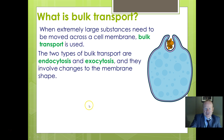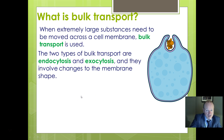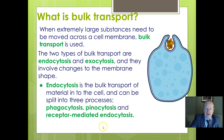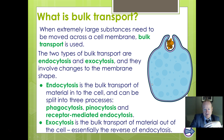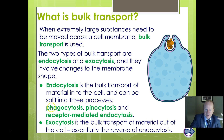Bulk transport — of which there are two key types, endocytosis and exocytosis — also requires energy. Both involve membrane shape changes. We've talked quite a bit about vesicles, which are just membrane-bound sacks made of plasma membrane. To be clear on the difference: 'exo' means exiting, so exocytosis is material leaving the cell; 'endo' means into the cell, so endocytosis is material moving in.